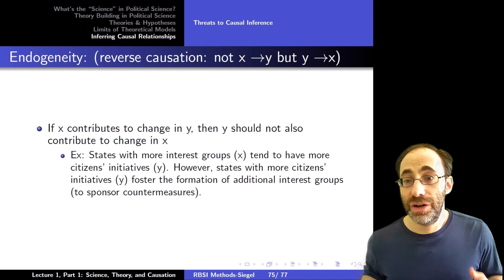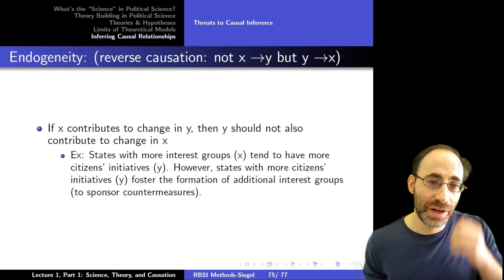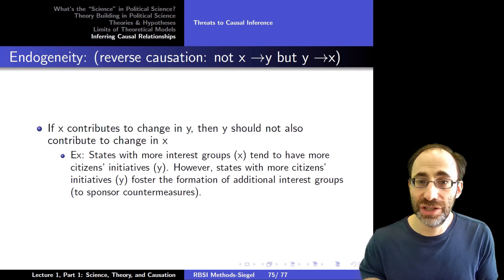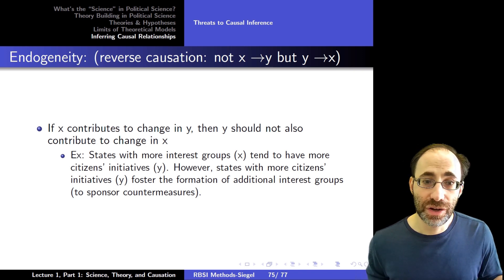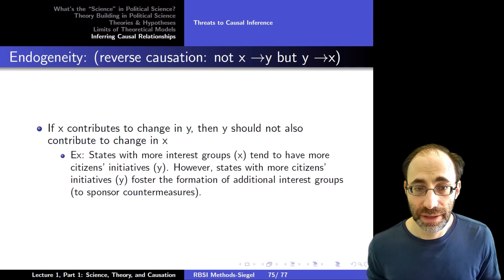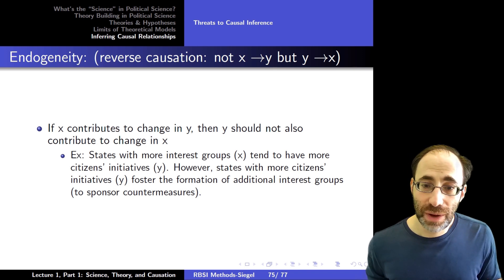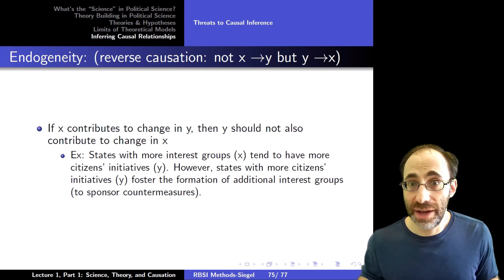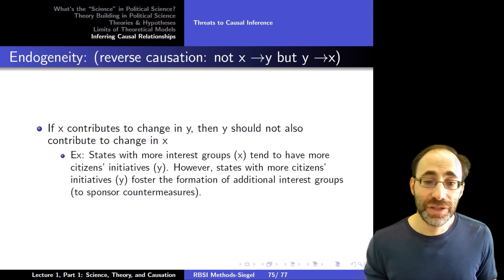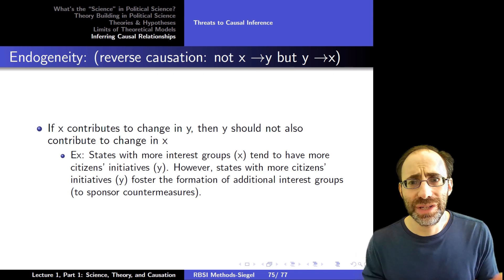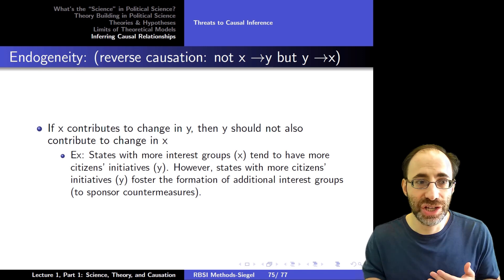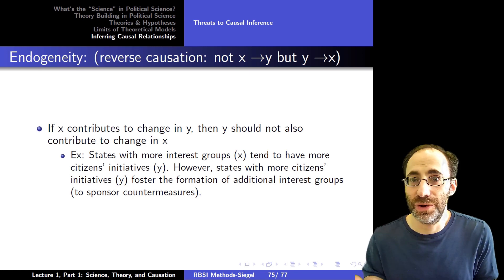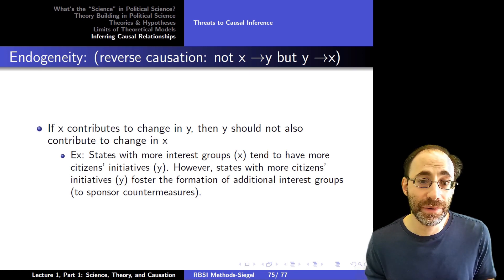The second one is endogeneity. It's called reverse causation. If we're trying to understand how X causes changes in Y, we don't want Y to cause changes in X. So if X contributes to a change in Y, we should not also have Y causing changes in X. Because that makes it more difficult to assess whether X does cause changes in Y. It might be just that Y is causing changes in X, and that's why they're connected, that's why they're correlated.